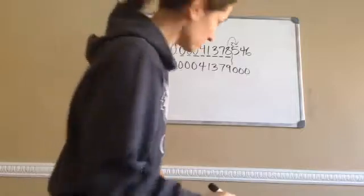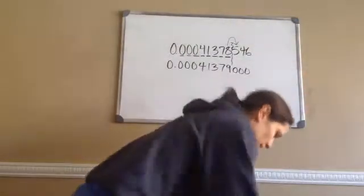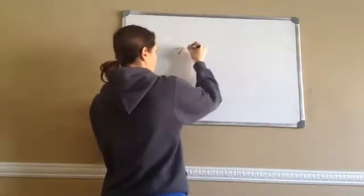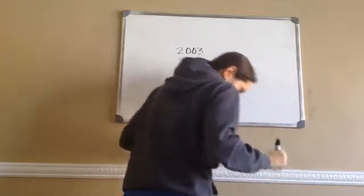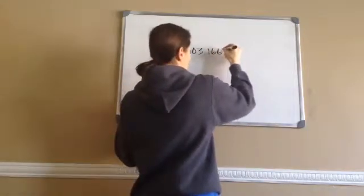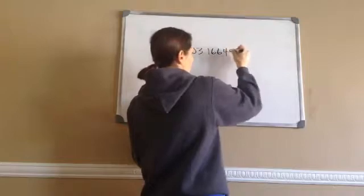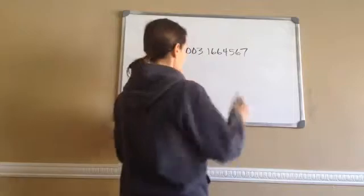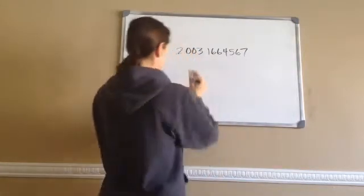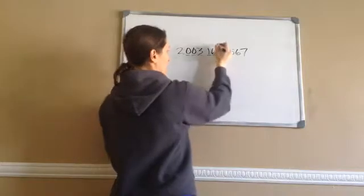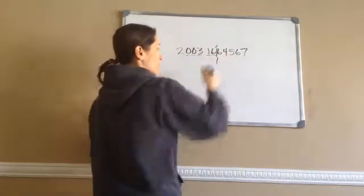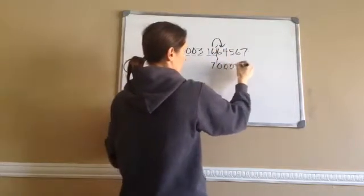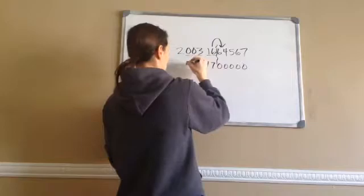Two more and then we're done. The next one says round 2.0031664567 to five decimal places — that means five places after the decimal. One, two, three, four, five — that's where they're rounding it to. Look to the right. Is it five or higher? Yes. This changes to seven. Everything else behind it becomes zeros, and bring everything else down.